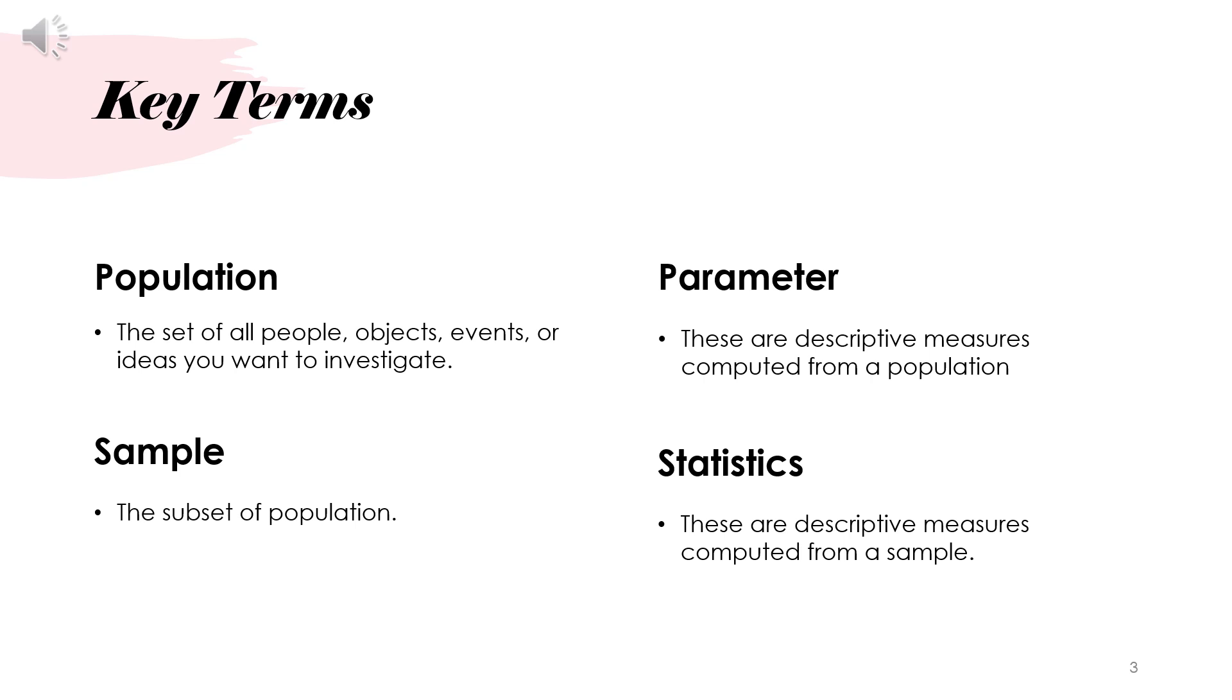What is parameter and statistics? Data from the sample are used to calculate statistics, which are only estimates of the corresponding population parameters. For instance, a sample might be drawn from the population, its mean is calculated, and this value is used as a statistic or an estimate for the population mean. When you obtained the mean from the sample or from the subset of the population, that is statistics. But when it's from the whole population itself, then that is parameter.